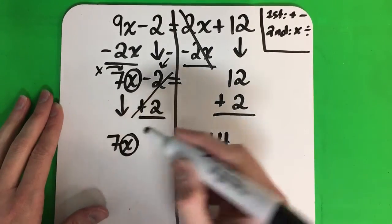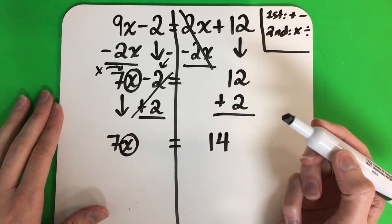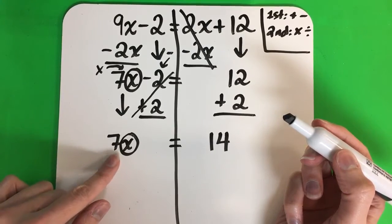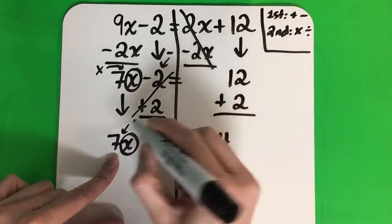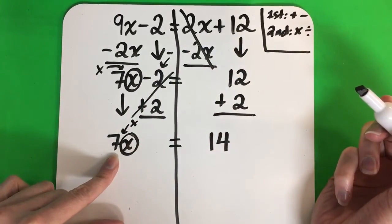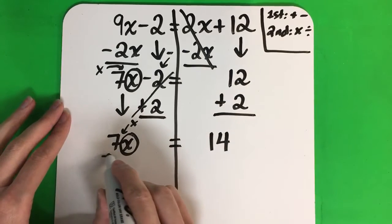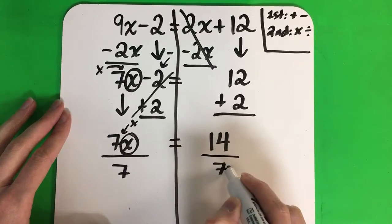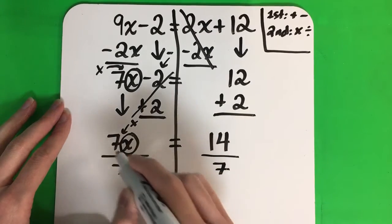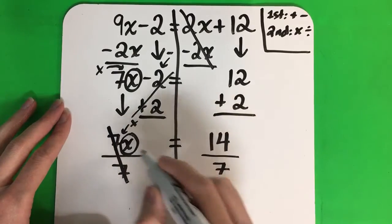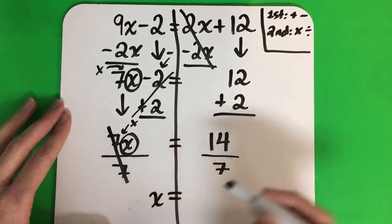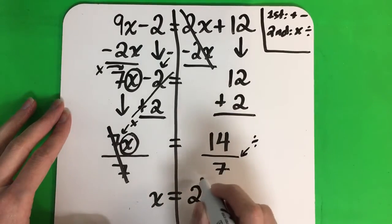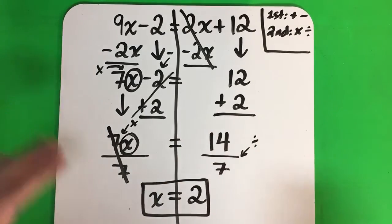Now remember my goal is to get the letter alone — I want that x alone. x is on the left. What number is with x on the left? 7. What's in the middle? Nothing — multiplication. The opposite of multiplication is division. So I'm going to divide by 7, and then here divide by 7. 7 divided by 7 is 1, so that cancels. x equals 14 divided by 7 is 2. So there's my answer.